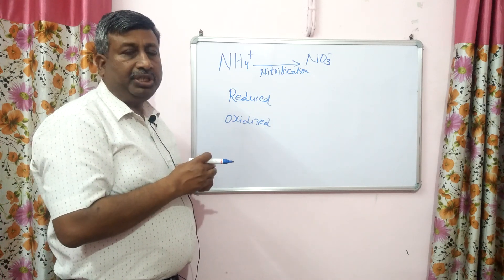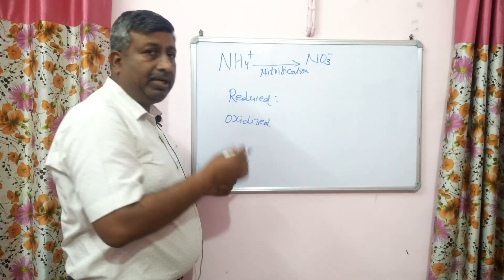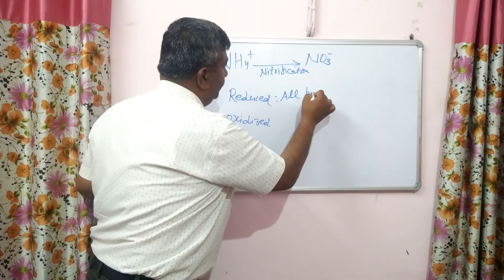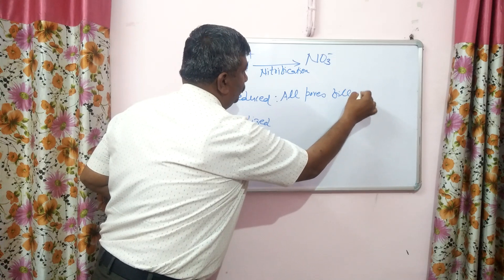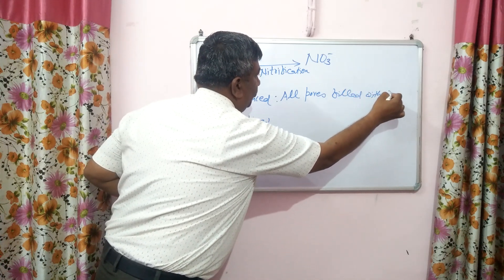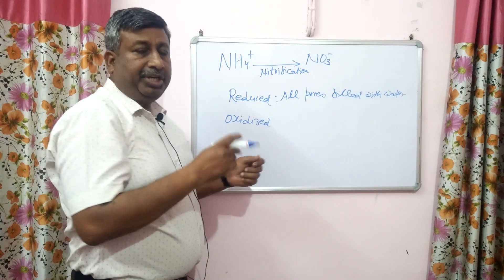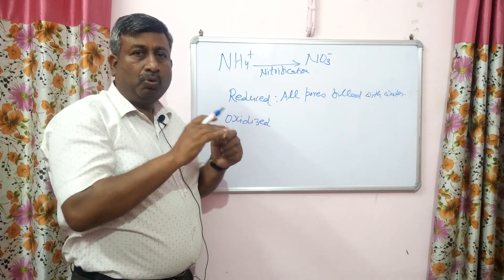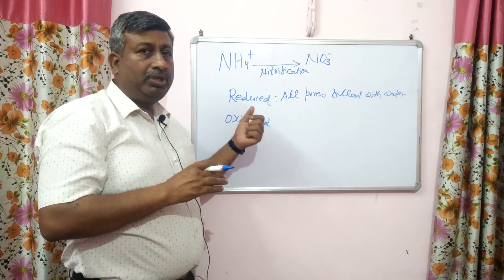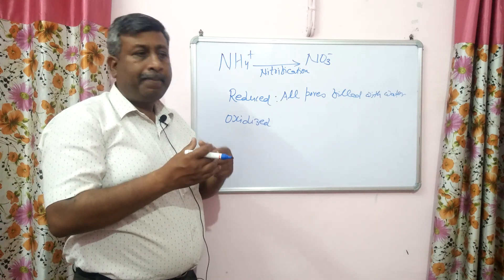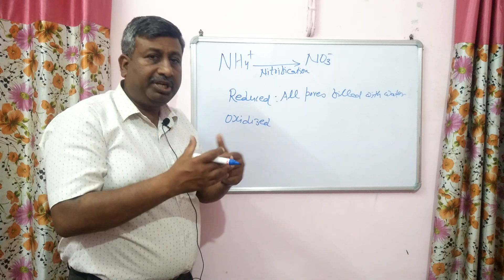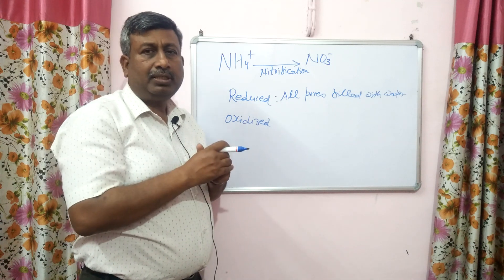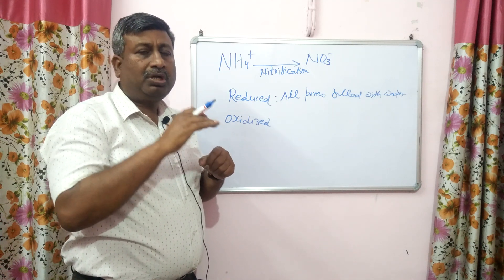Reduced condition means when all the soil pores are filled with water — all pores of soil are filled with water. This situation occurs when there is heavy rainfall or heavy irrigation and the soil is saturated with water. All the pores have water and there is no air, no oxygen. This situation is known as reduced condition.